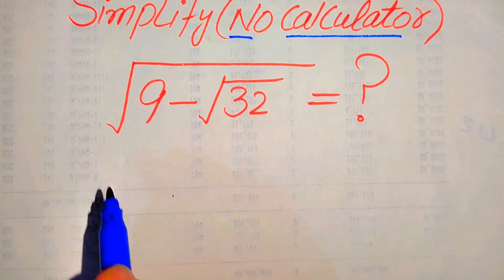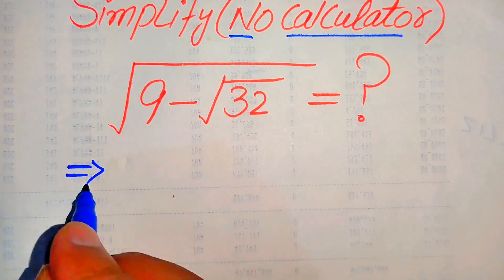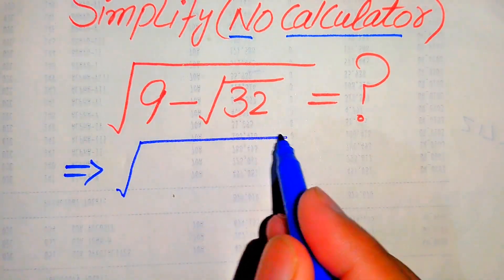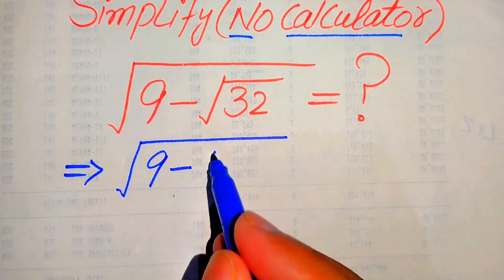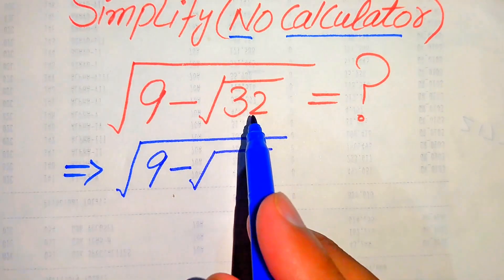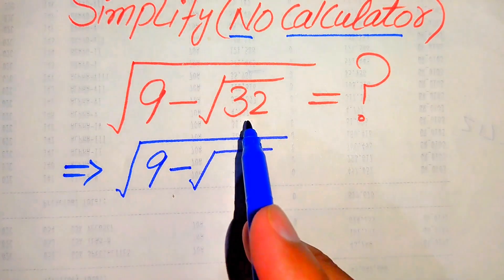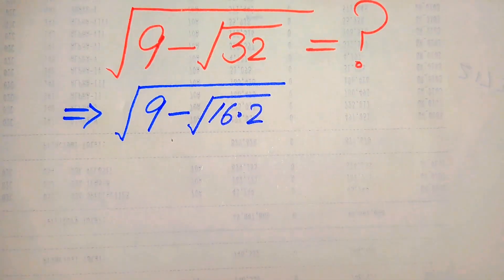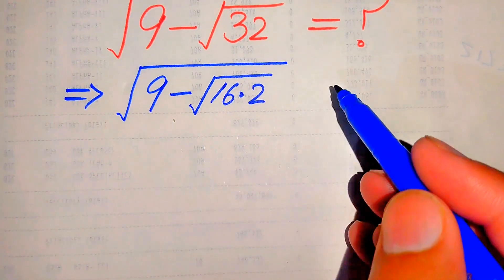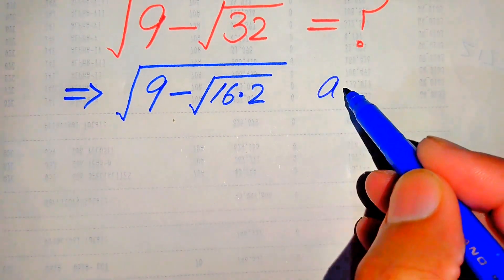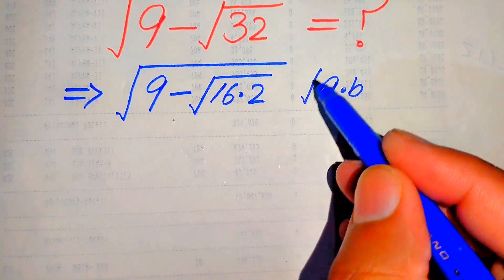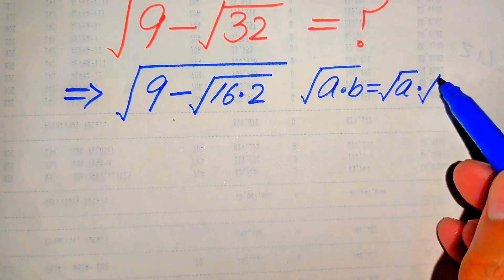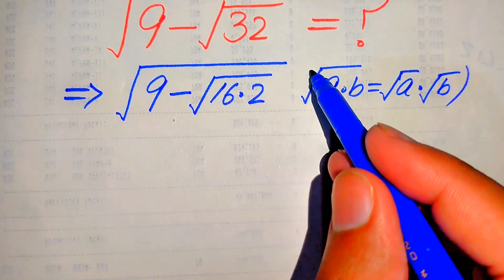The very first thing we are going to do is focus on the square root term. We break this square root term: we have 9 minus square root of 32. We write 32 as 16 times 2. Now we use this nice exponent law: if we have the square root of a multiplied by b, it equals square root of a multiplied by square root of b.